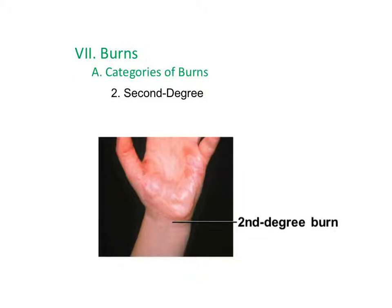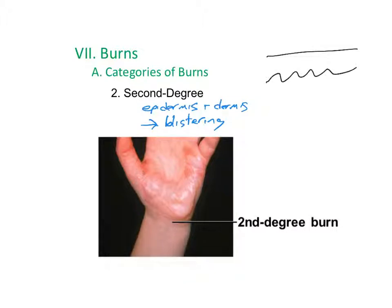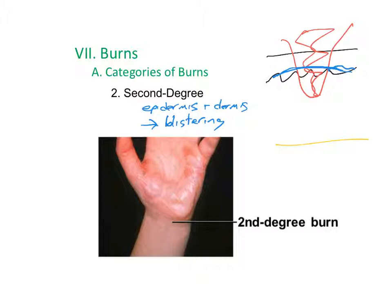A second degree burn covers both the epidermis and dermis and leads to blistering — a separation of the dermis from the overlying epidermis, creating an air-filled space between the two layers. These are very painful and take longer to heal because the stem keratinocytes that recreate the skin layer have been eliminated.